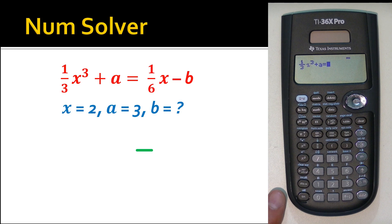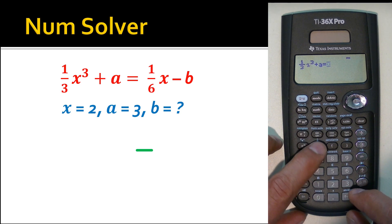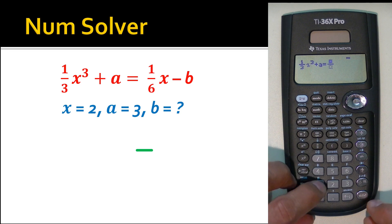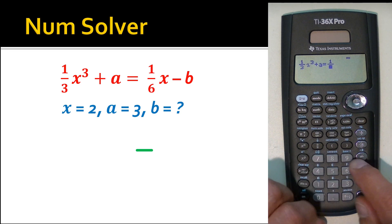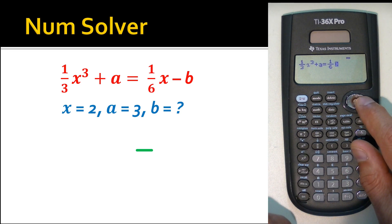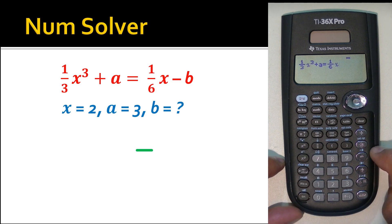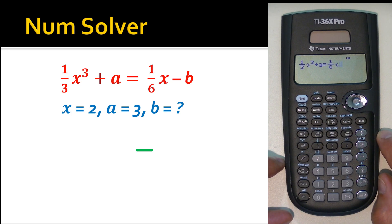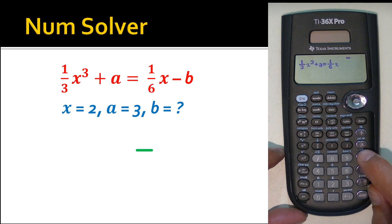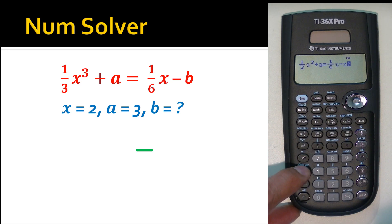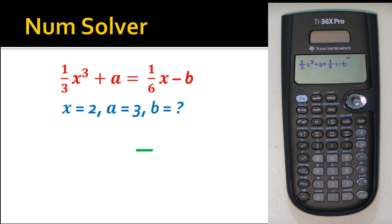Now arrow over to the right-hand side of the equation. Enter a fraction: one over six, then just hit x. Then hit the minus sign — this doesn't represent the actual value of b, it's just the operator — then cycle through the variable keys again until you get to b. That's the full equation entered.